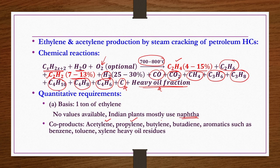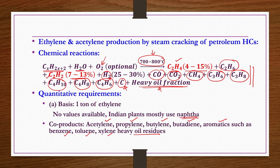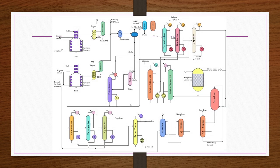Quantitative requirements for 1 ton of ethylene: Indian plants mostly use naphtha as raw material. Co-products include acetylene, propylene, butylene, butadiene, aromatics (benzene, toluene, xylene), and heavy oil residues. Temperature and reaction time are very important for controlling product distribution. Plant capacity is typically 100–600 tons per day.